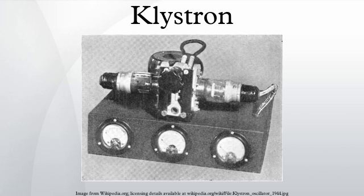In the klystron, an electron beam interacts with the radio waves as it passes through resonant cavities — metal boxes along the length of the tube. The electron beam first passes through a cavity to which the input signal is applied. The energy of the electron beam amplifies the signal,